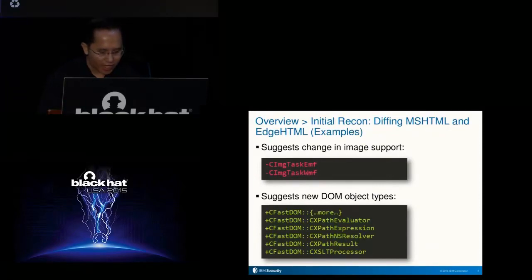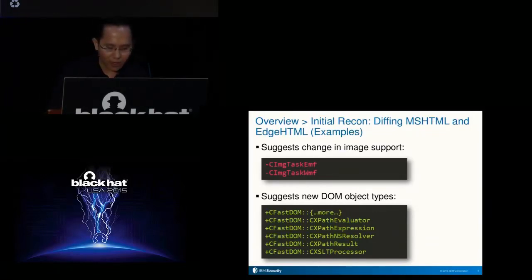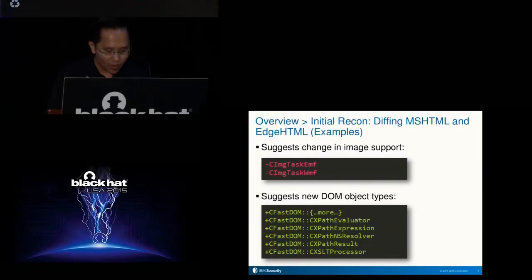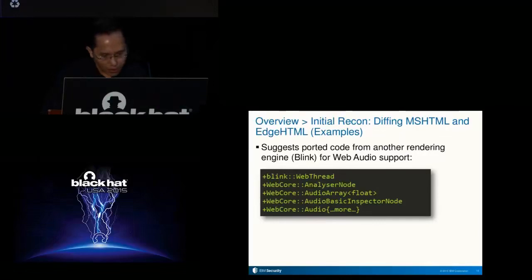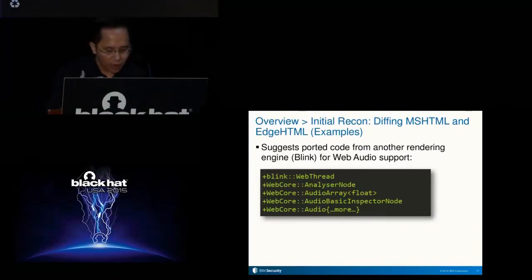Here's what the output looks like in a text editor that supports the diff output format. In the first output, the removed classes suggest possible changes in the support for EMF and WMF images. The second output, which lists new namespaces under the CFAS DOM namespace, suggests new DOM object types exposed by the DOM API. Some interesting output includes new namespaces or classes that suggest ported code from another rendering engine — in this case Blink — for the new web audio support in EdgeHTML.